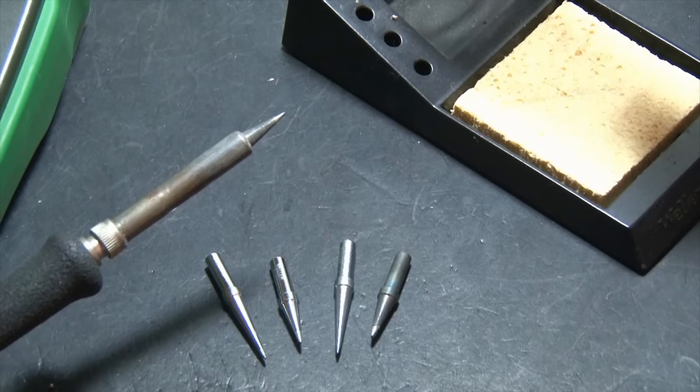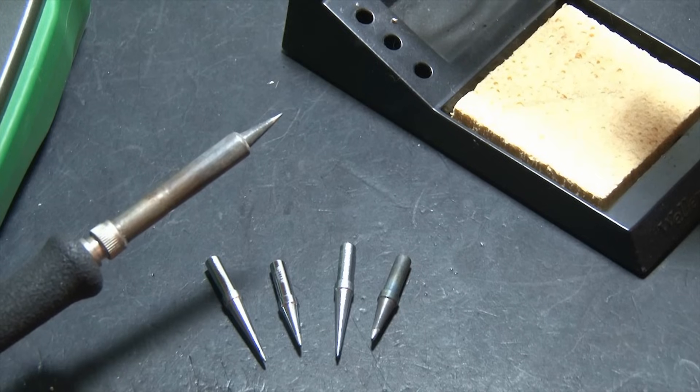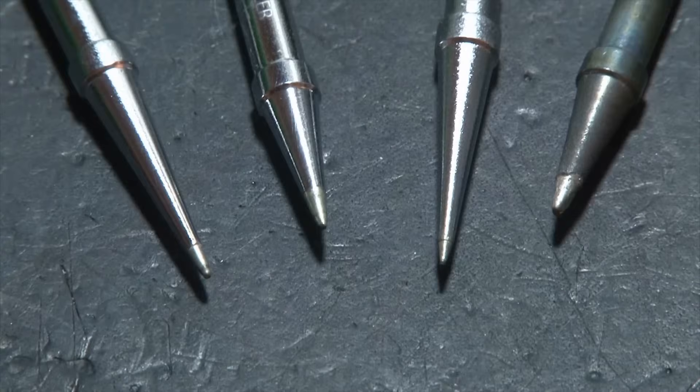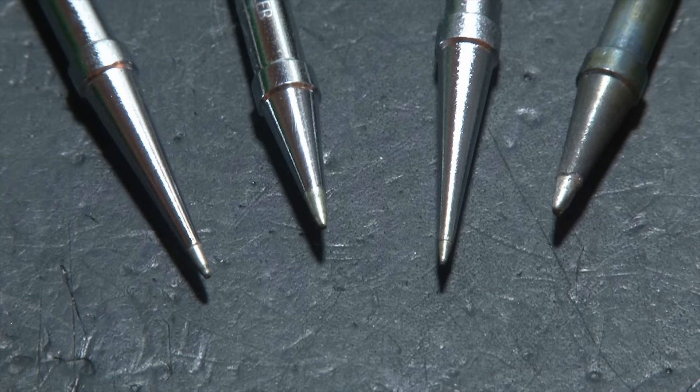In addition to the standard soldering tip, every high-quality soldering station will include a number of interchangeable tips that you can add to your soldering tool. From left to right we have a long screwdriver tip, which is 1/32nd of an inch, then we have a conical tip, followed by a long conical tip, and then another standard tip.